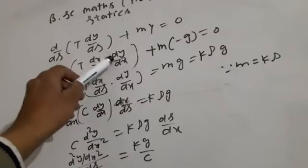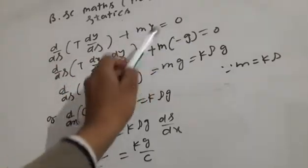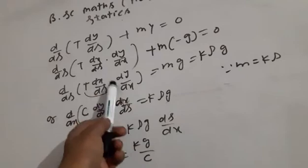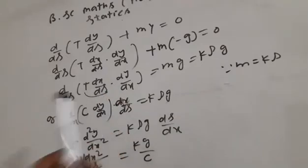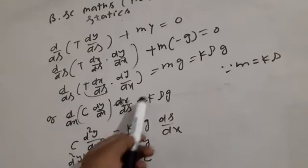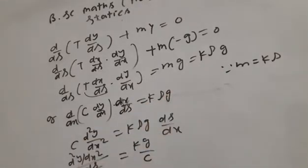Multiplying and dividing, T dx/dx equals c. Then d/dx dy/dx, and m equals k times rho. After differentiation, we get c d²y/dx² equals kg/c.